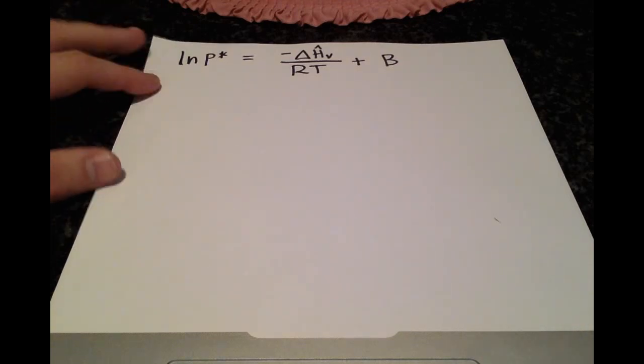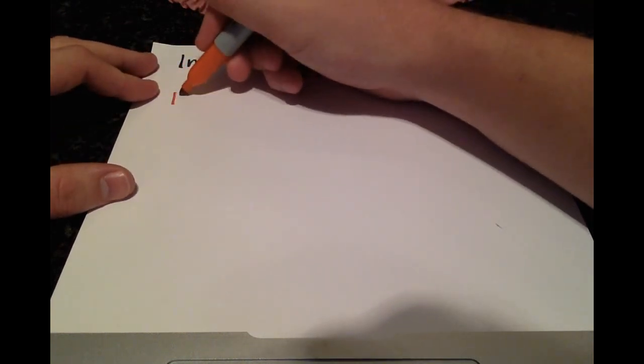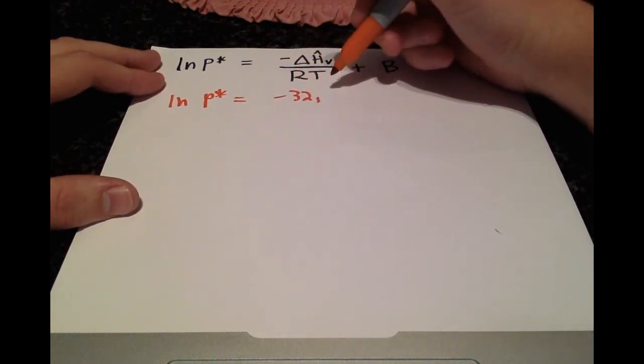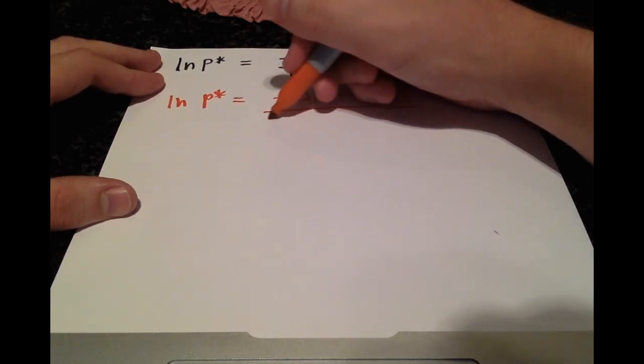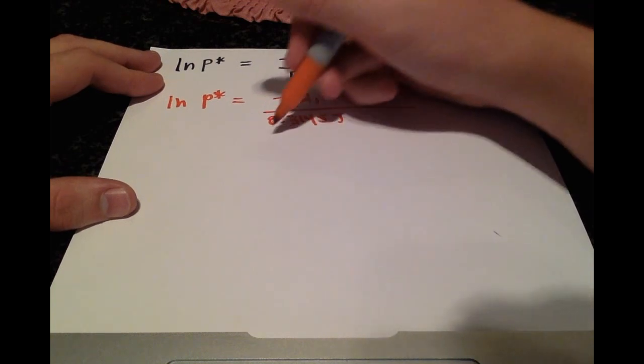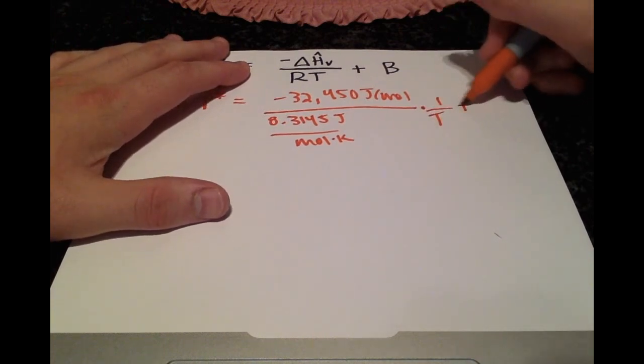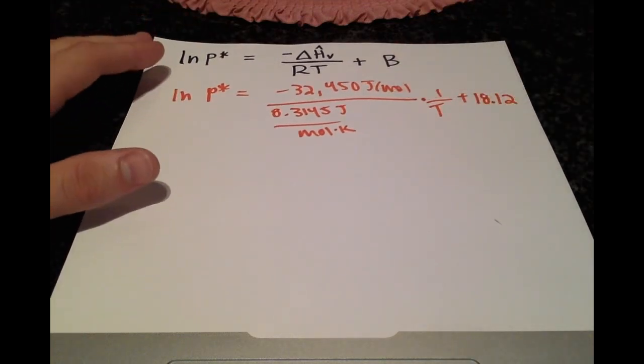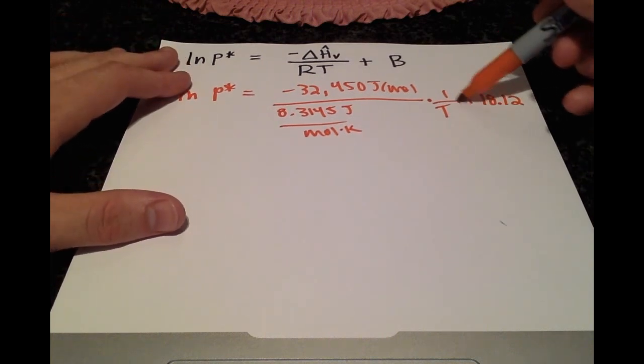On a separate piece of paper, I've written the Clausius Clapeyron equation, the general formula. All we have to do is plug in the values that we were given. For the first step, that's all we need to do, and then we'll simplify and rearrange it to solve for T.